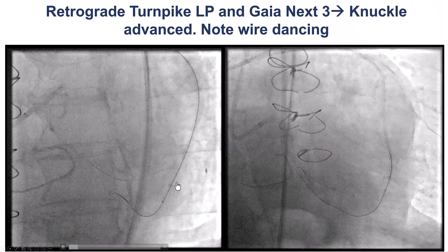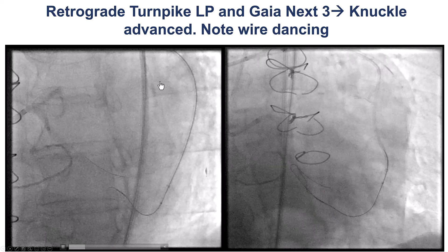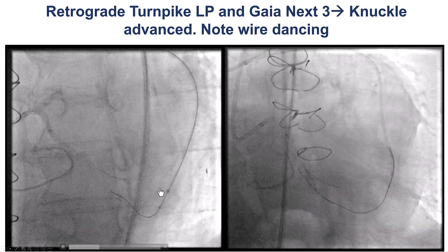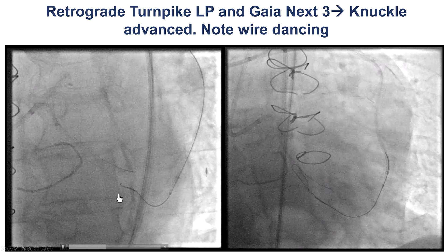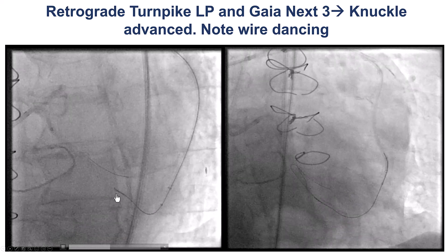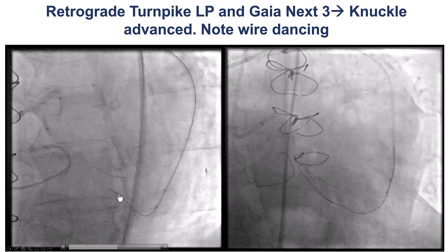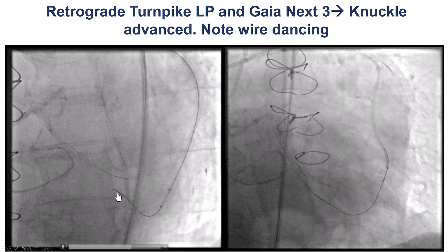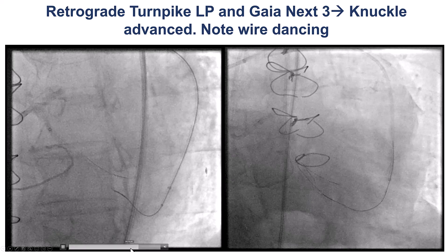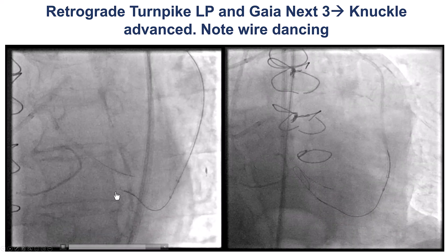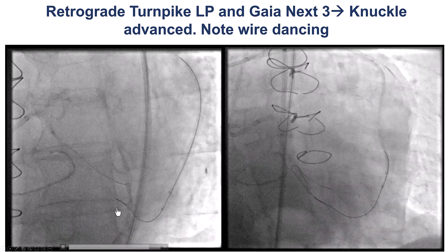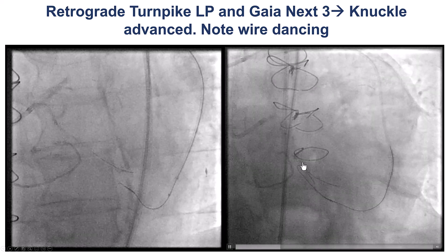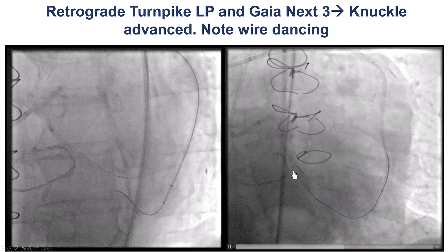After doing that, we had significantly better support. We no longer saw the bowing of the guide extensions. By using this technique, we were then able to advance a retrograde Gaian X3 with much more pushability. That wire eventually knuckled and went along the anticipated course of the vessel, advancing and coming close to the antegrade guide wire.